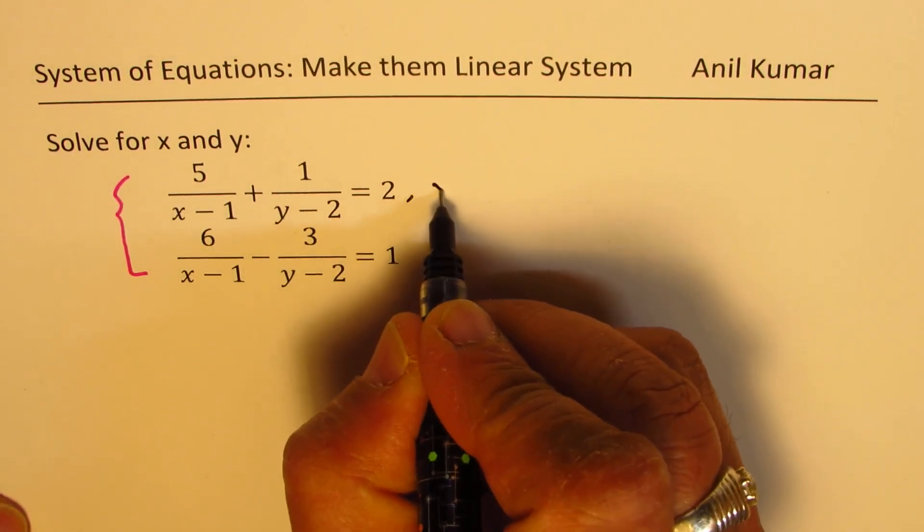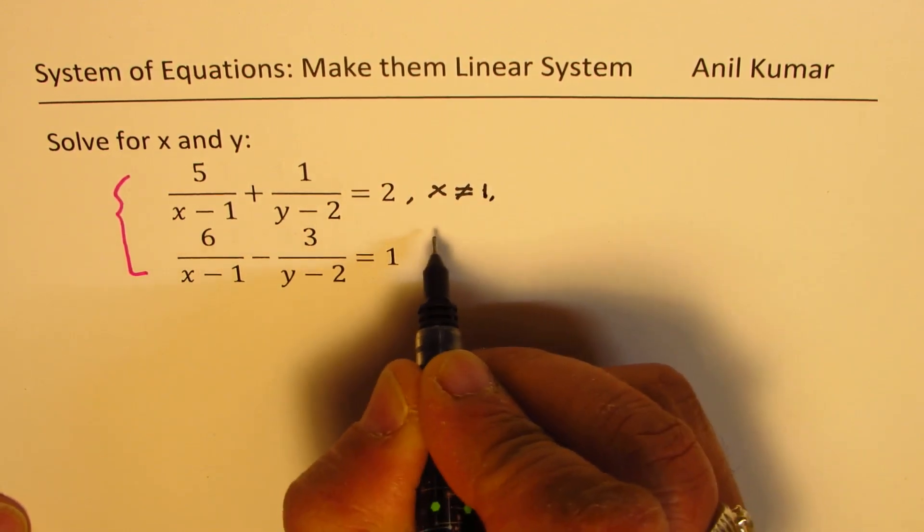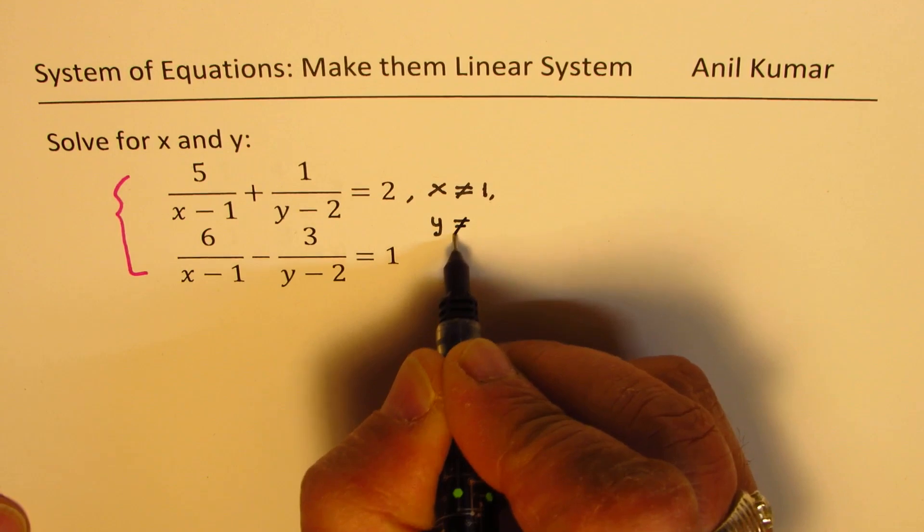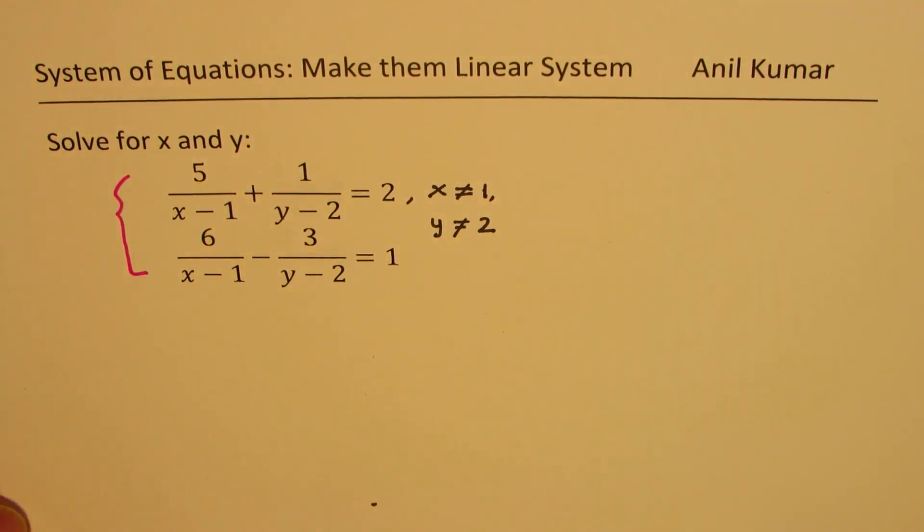Of course, in this case, we'll have a restriction that x is not equal to 1 and y is not equal to 2, since that makes the denominator 0 and the expression becomes undefined.